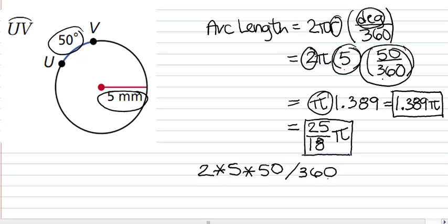So, that's how it would look. And that gives you 1.389, and then you just stick your pi onto the end of it. So, that's it.